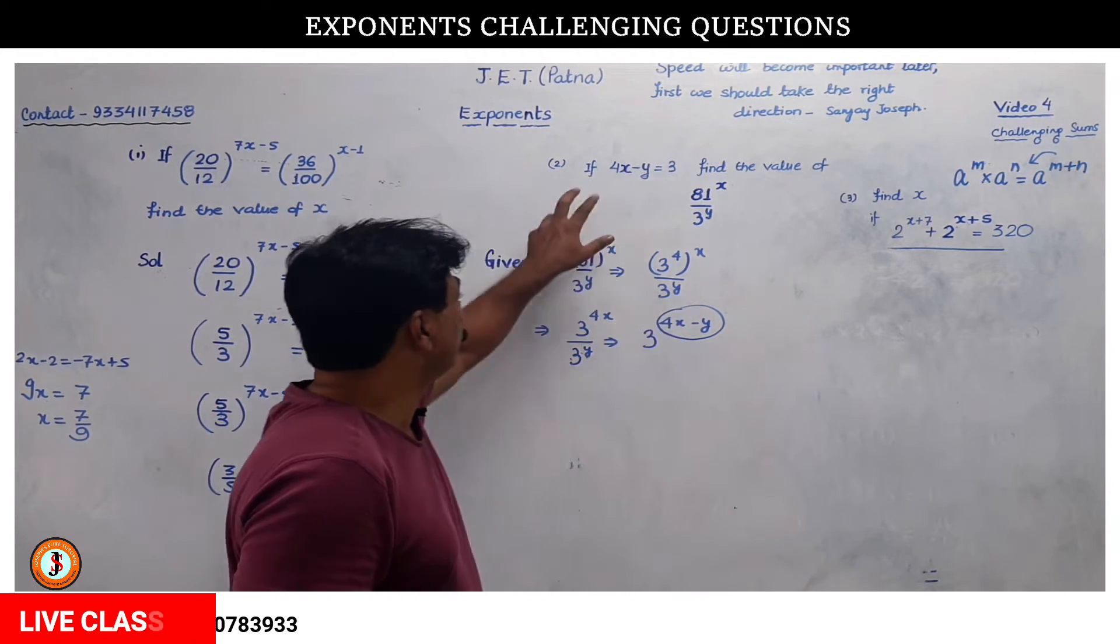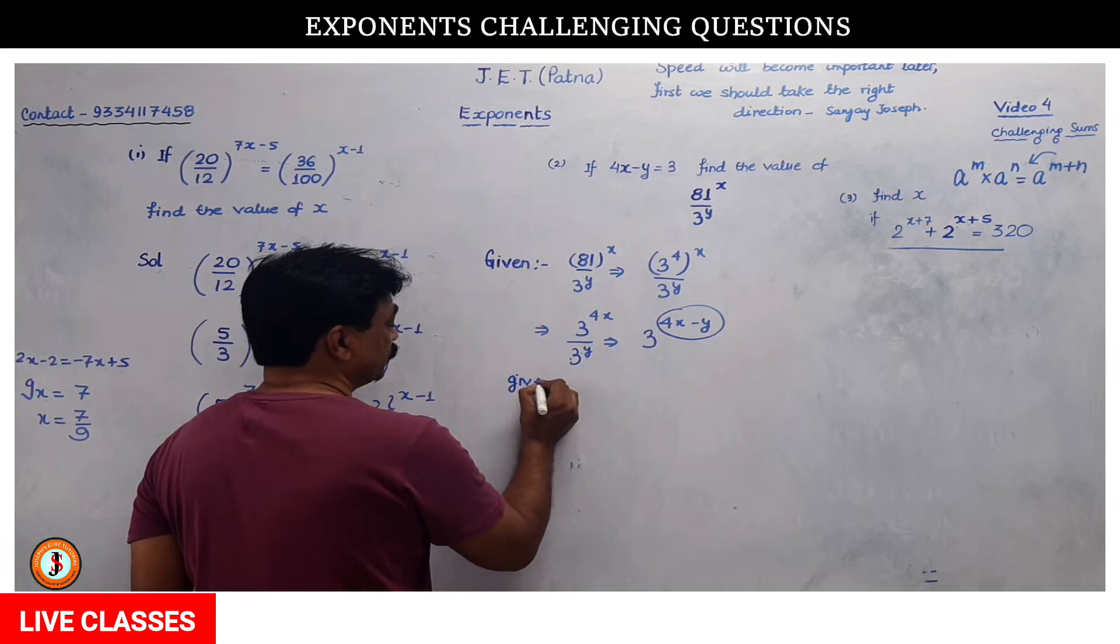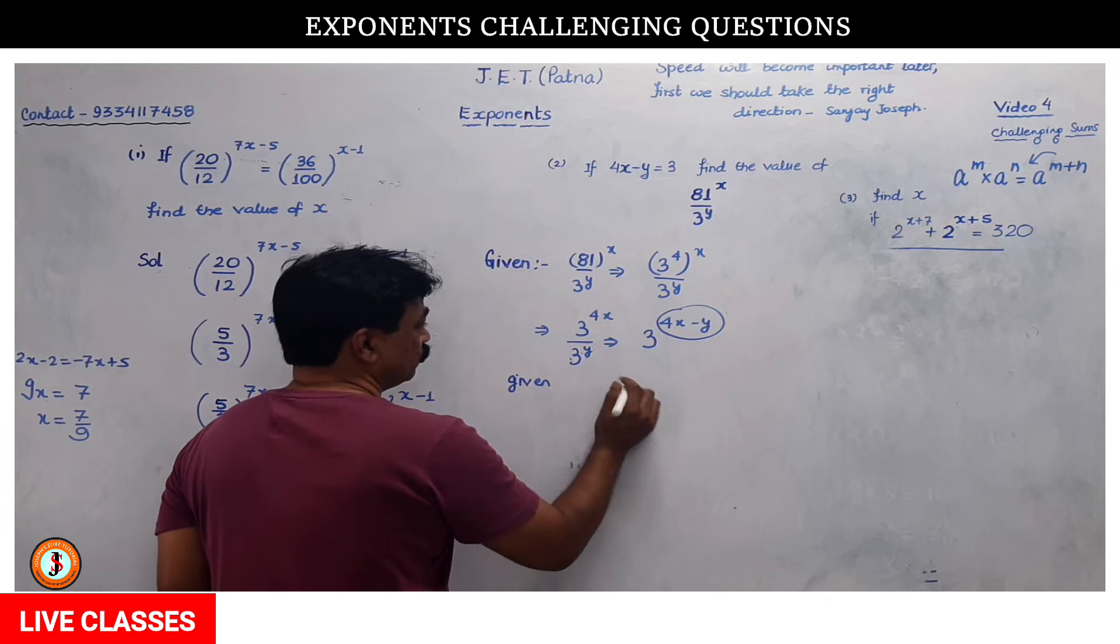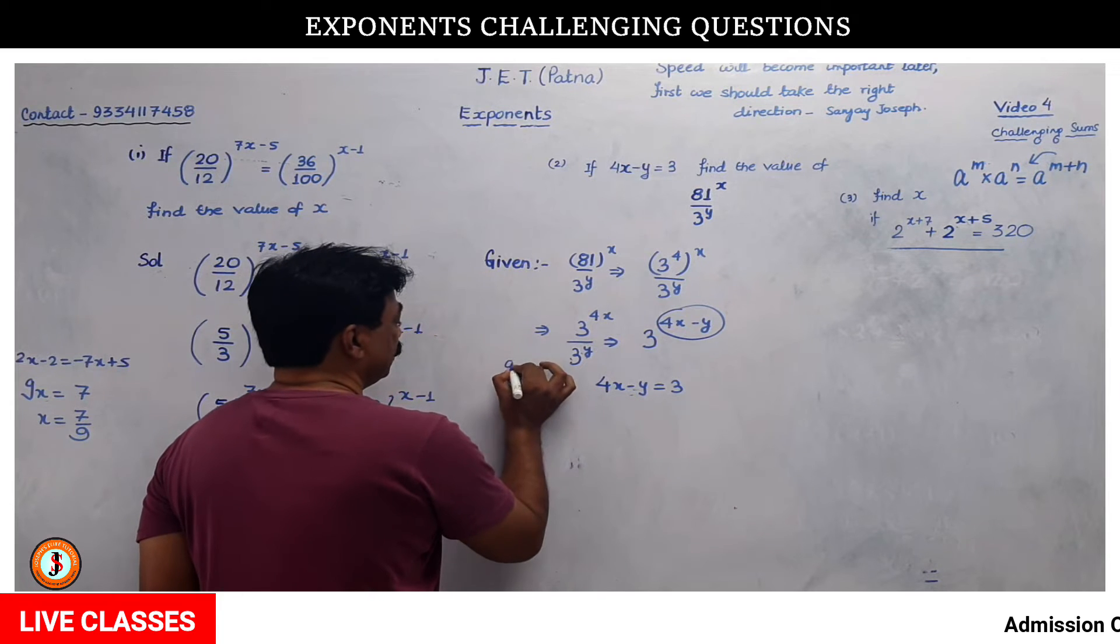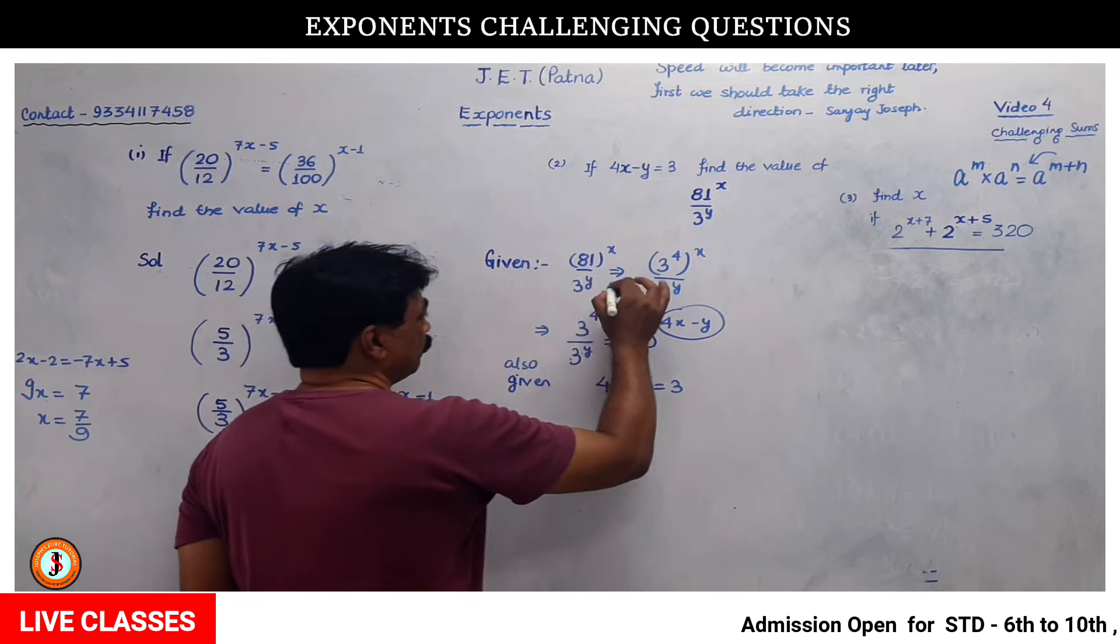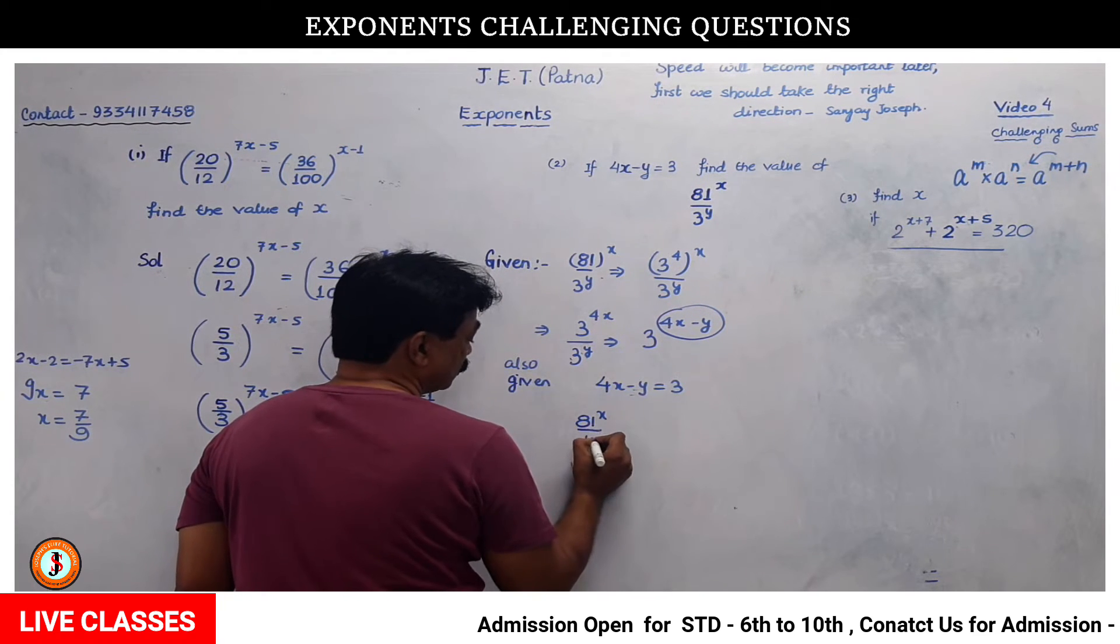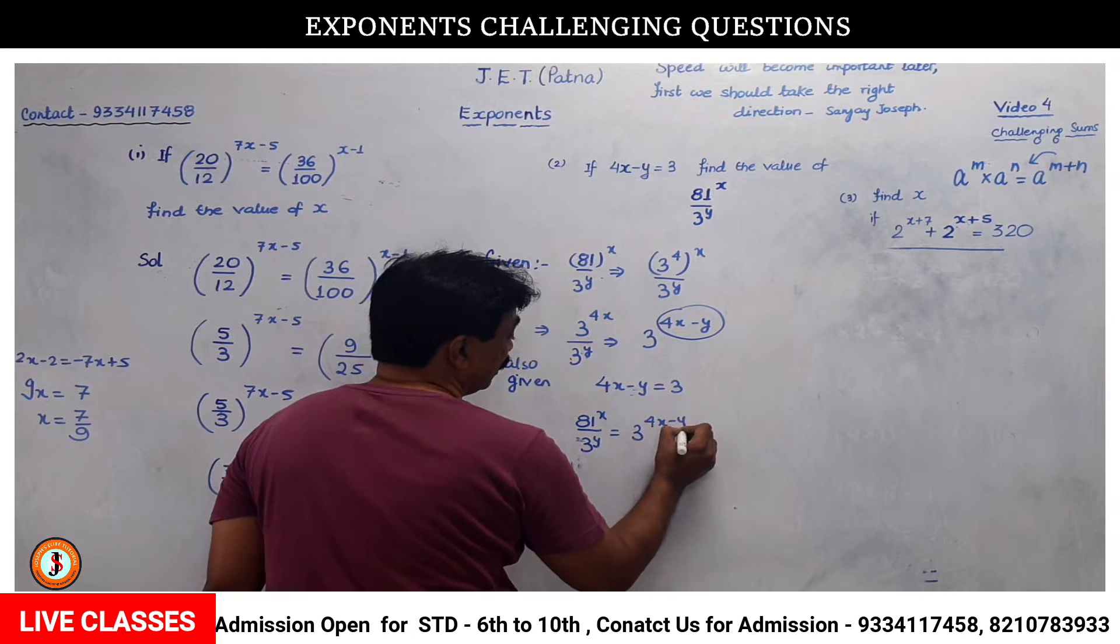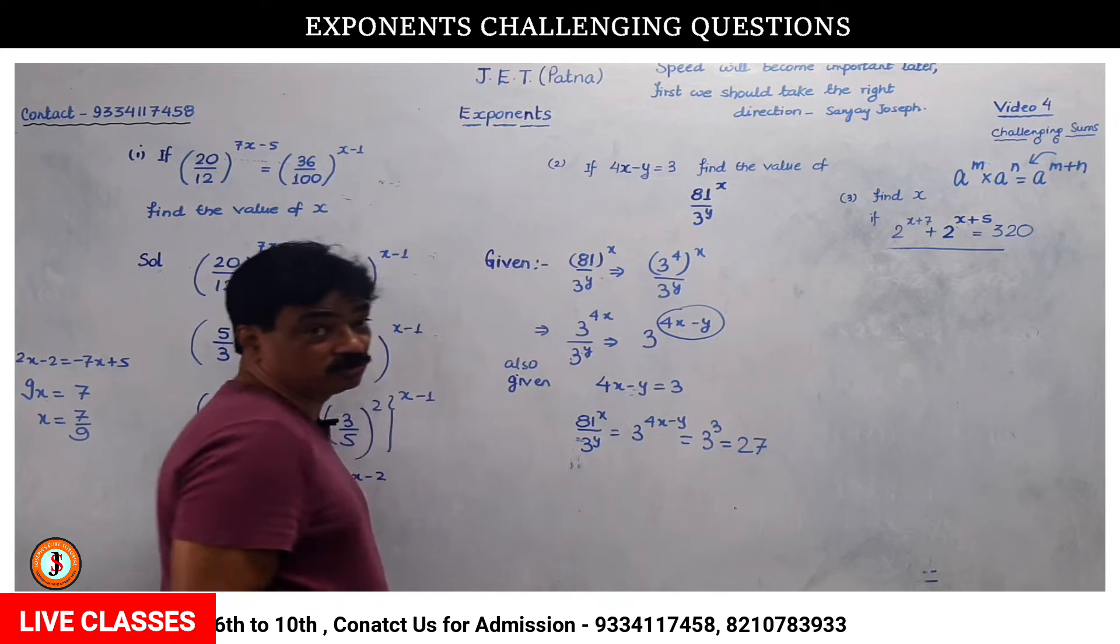If we have enough value to see this, now let's go back to this. X or y ke value alag se nahi diya, lekin 4x minus y ke collective value 3 hai. Given: 4x minus y is equal to 3. This is also given. Now 81 to the power x, 3 to the power y, can be written as 3 to the power 4x minus y which equals 3 to the power 3. So the answer is 27.